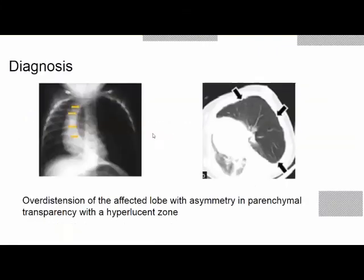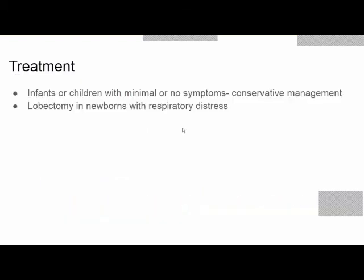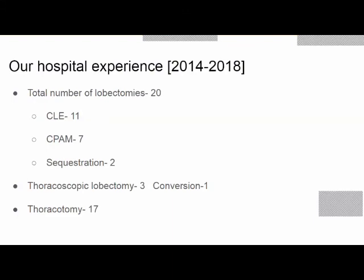CLE clinical features depend on the severity and time of onset of symptoms, related to the degree of parenchymal distension. Infants primarily present with tachypnea, cyanosis, and episodes exacerbated by feeding or crying. V/Q scan may show nearly absent perfusion of the affected lobe. Diagnosis is by X-ray showing overdistension of the affected lobe with asymmetry and hyperlucent zone, confirmed on CT. CLE is one rare situation where the severity of respiratory distress can lead to mistaken insertion of an ICD for pneumothorax — which should not be done. If severe, bedside thoracotomy in ICU may be needed. Conservative management is also an option for those not in severe distress. Surgery involves lobectomy.